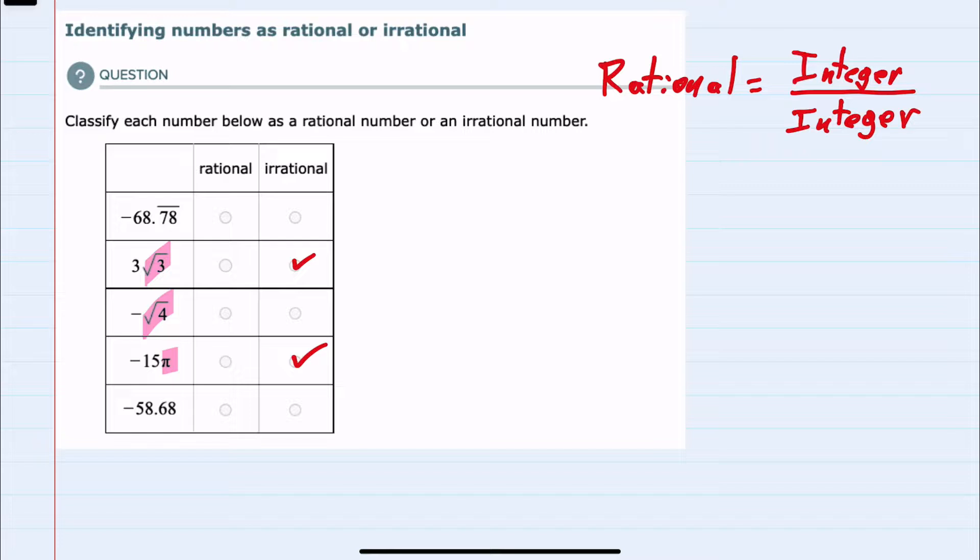However, the square root of 4, since 4 is a perfect square, the square root of 4 is just 2. So this expression can be simplified to just minus 2, and that is rational.